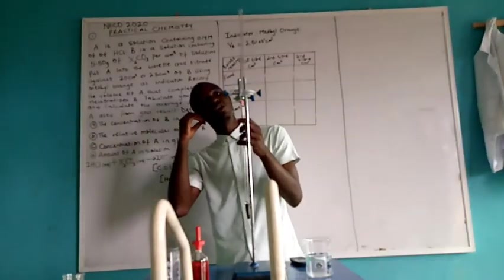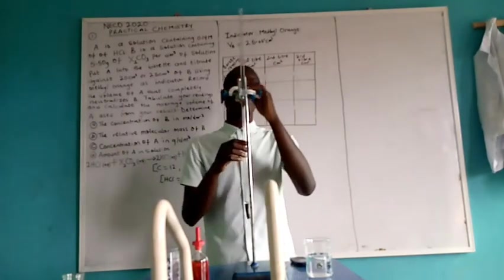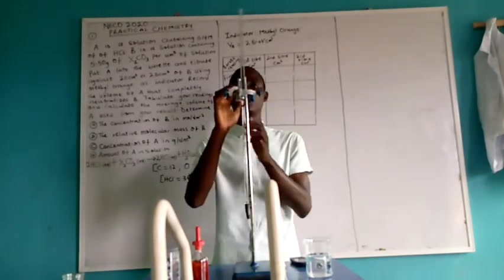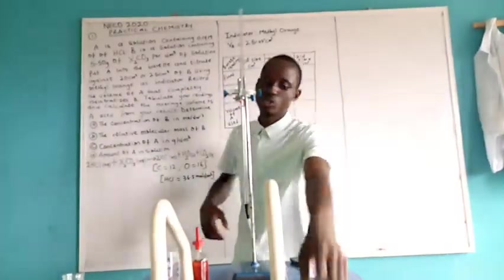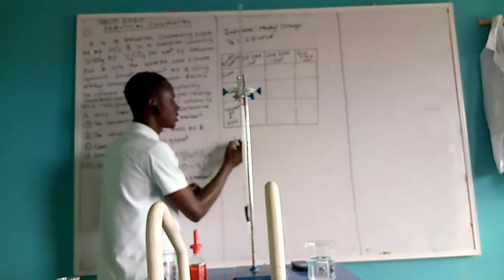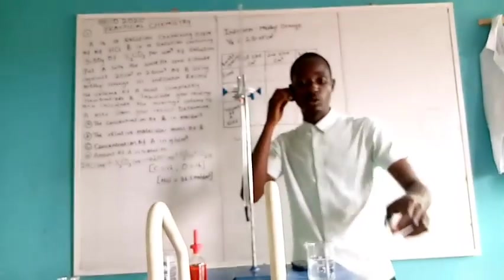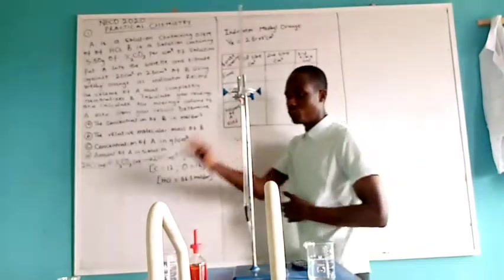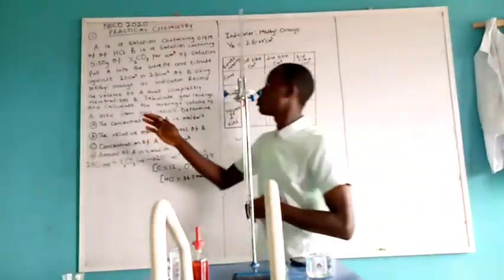Next precaution: you don't view the burette either at the side to avoid parallax error. You view straight and you concentrate on the lower meniscus. The meniscus goes this way, so you concentrate on this lower side, not the two edges. As we proceed on the experiment, I will give more procedures that you need to follow.